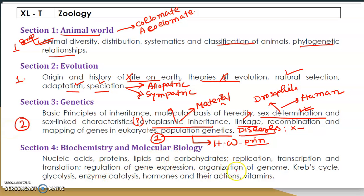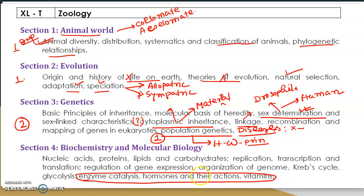Now coming to biochemistry and molecular biology. Enzymes, catalysis, and hormones are very important. Transcription and translation are also covered — you will get one question from translation. Many questions come from hormones and their mechanisms, and also from enzymes. For example, enzyme inhibition graphs have appeared before; this time you can expect questions on temperature effects or Km value-based enzyme catalysis.